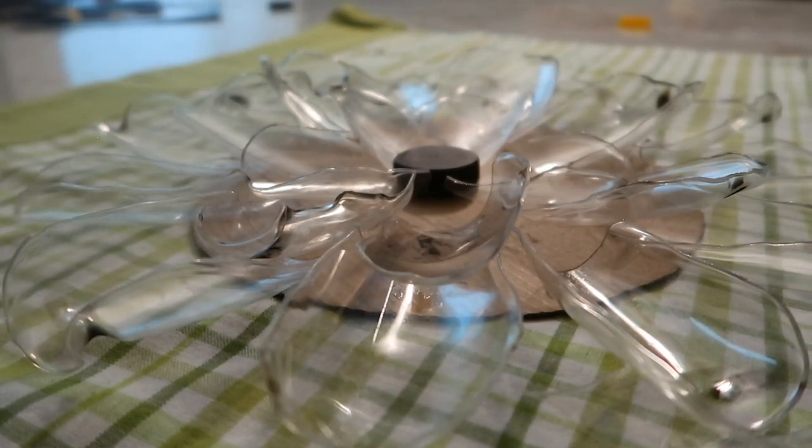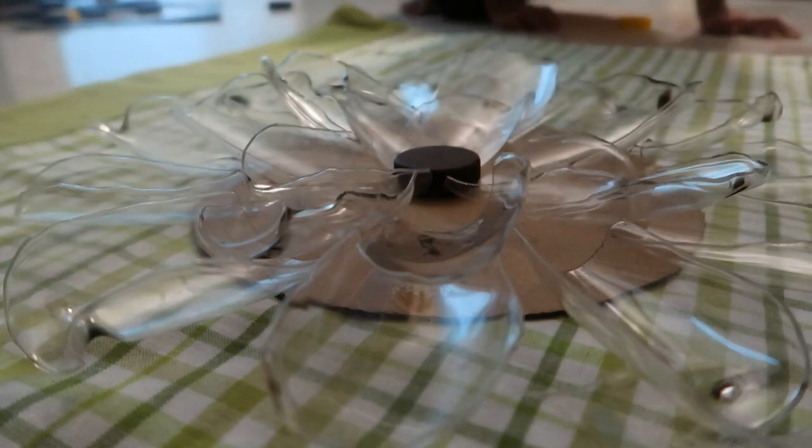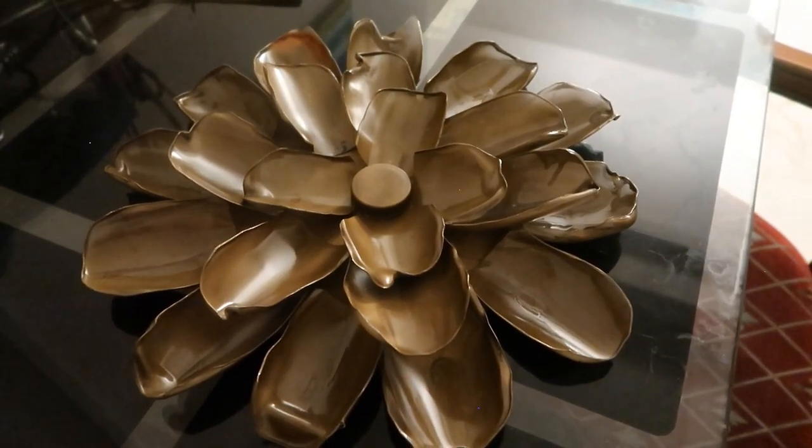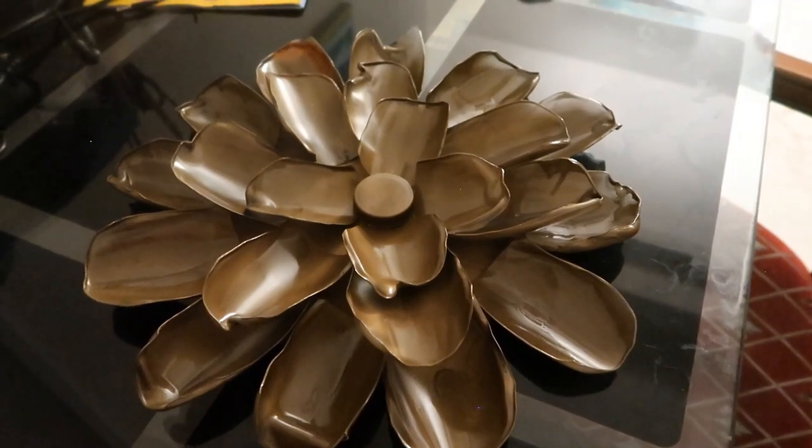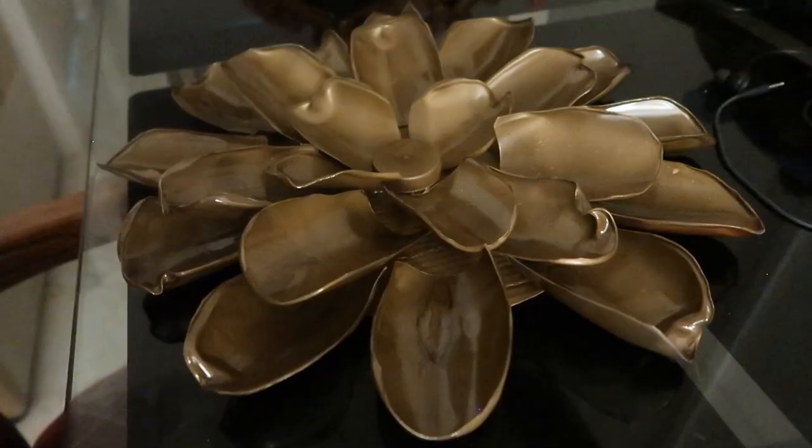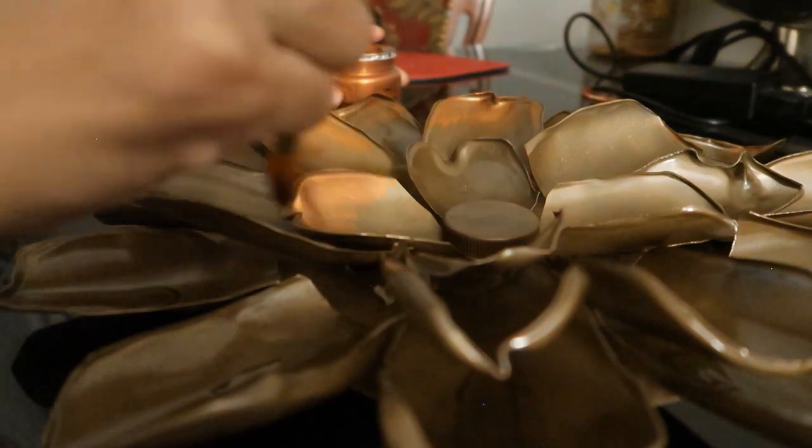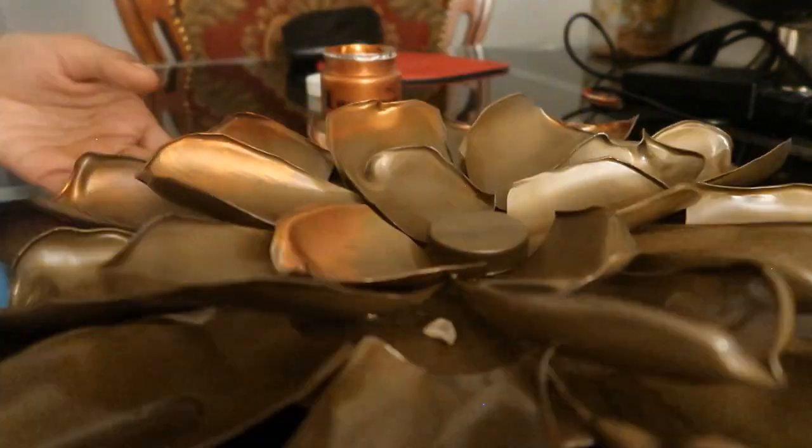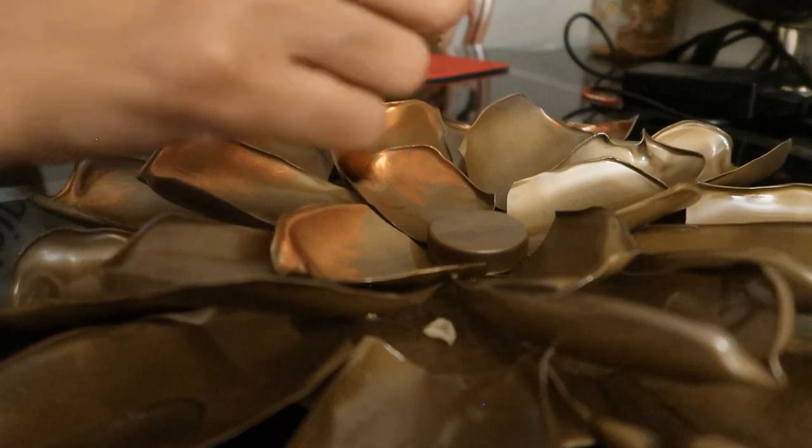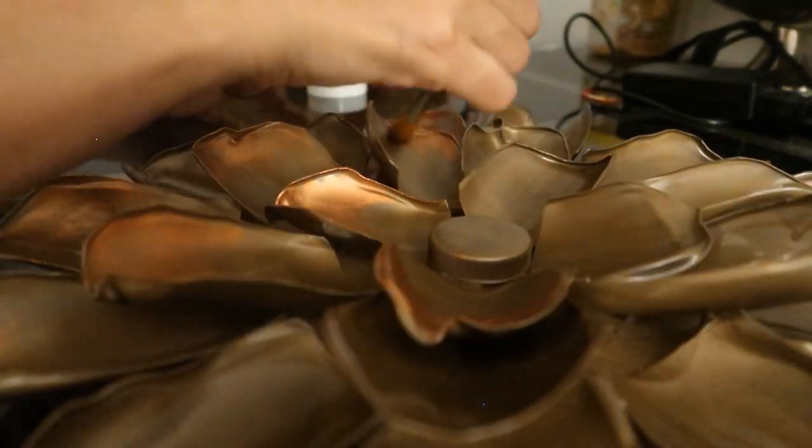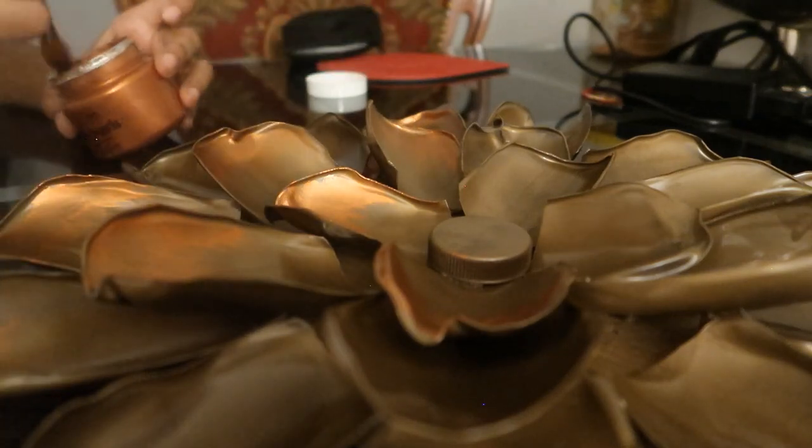Now it's time to fill up with the color, your preferred color. I have spray painted it with an antique touch, so you can use your preferred color. Either you can go up with bright colors or metallics, all upon your wish. Next we'll be giving a final look, so for that I have taken metallic copper and we'll be giving a shading effect.